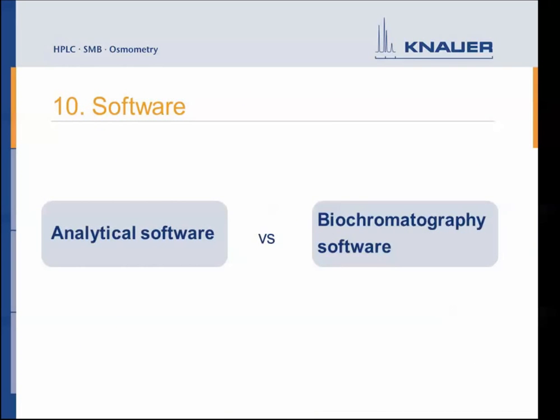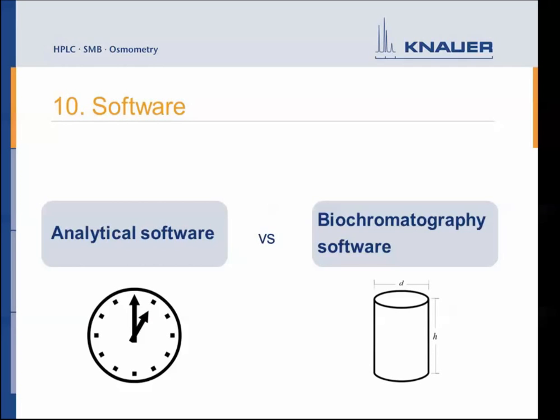The last difference between HPLC and FPLC is the software. For HPLC, an analytical software with many analytical tools is used, and it is usually time-based. Biochromatography software doesn't need all these analytical tools, but importantly allows users to write methods that are volume-based or even column volume-based. For methods like affinity chromatography, the column volume is the most important factor, making it easy to scale up your method when the column volume increases.